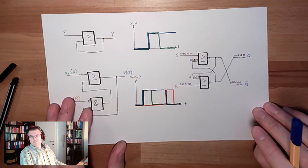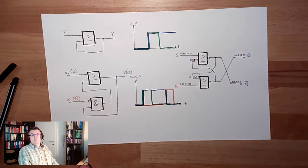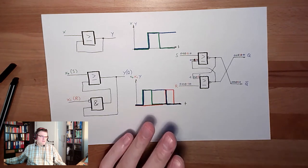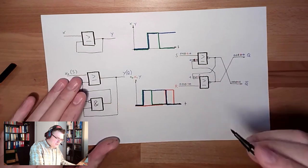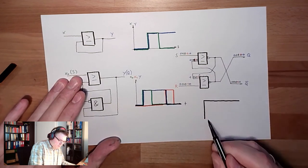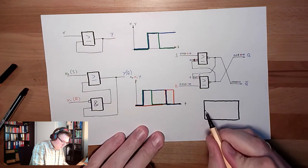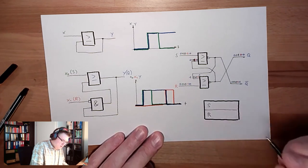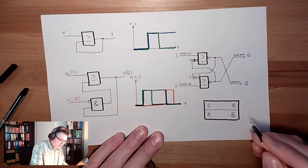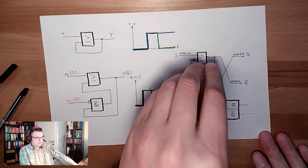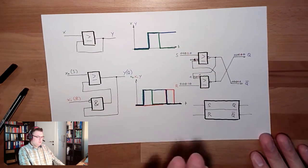In NOR technology, this is how it looks. There's nothing magical about it — it's just a pretty neat combination of elements. The symbol for this is a big block with a set input, a reset input, a Q and a Q-bar output. That's it. This is called a latch. Whether it's built with AND-OR or NOR or NAND inside — it's okay, it's a latch memory symbol.